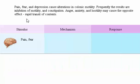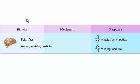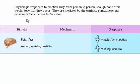Pain, fear, and depression cause alterations in colonic motility. Frequently, the results are inhibition of motility and constipation. Anger, anxiety, and hostility may cause the opposite effect — rapid transit of contents. Physiologic responses to emotion vary from person to person, though none of us would deny that they occur. They are mediated by the extrinsic sympathetic and parasympathetic nerves to the colon.